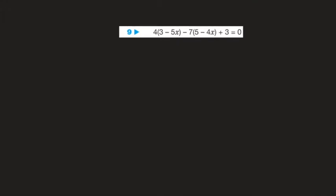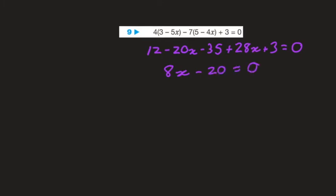Multiplying by 4: 4 times 3x is 12x, minus 4 times 5x is minus 20x, minus 7 times 5 is minus 35, and minus 7 times minus 4x is positive 28x, plus 3 at the end, equal to 0. Grouping like terms: minus 20x plus 28x leaves 8x, and 12 plus 3 is 15, minus 35 is minus 20, equals 0. Therefore 8x equals 20, and x equals 20 over 8, which reduces down.